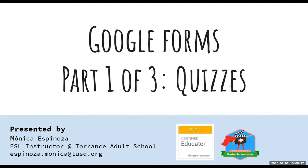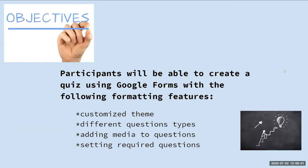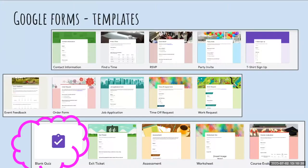Today you are going to be able to create a quiz form using Google Forms, and we're going to apply the following formatting features: customize the theme of your form, how to use different question types, add media to your questions — pictures and video — and how to set a required question or make a question not required for your users. As you type questions into the chat box, I'll do my best to address them or let you know the answer is coming up later.